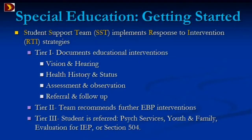Tier 2 is where, if the regular interventions and supports don't help the student, they have to receive extra evidence-based interventions from teaching. Then Tier 3 is when we're really referring the kid to psych services, youth and family. Maybe they need Section 504, and then they may need to be referred on for evaluation for special education.